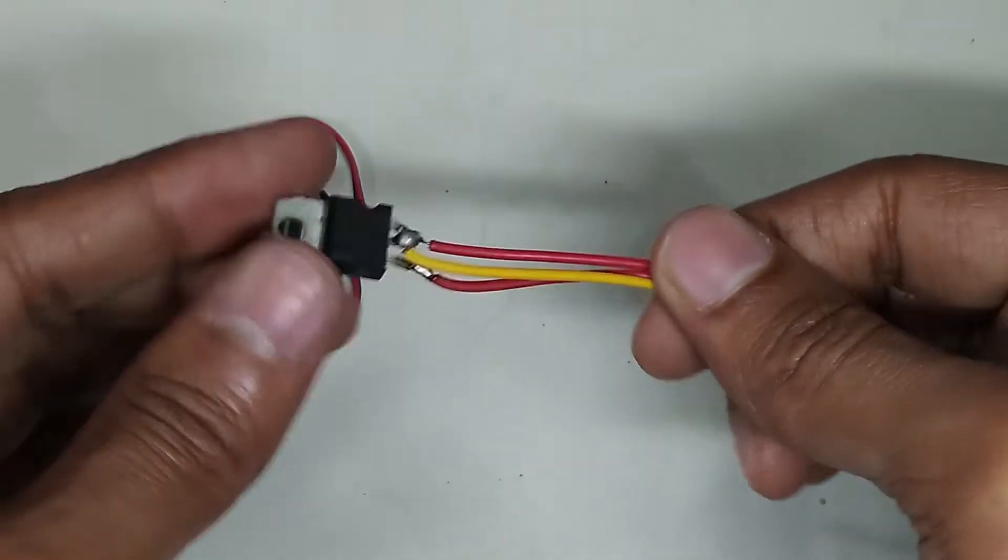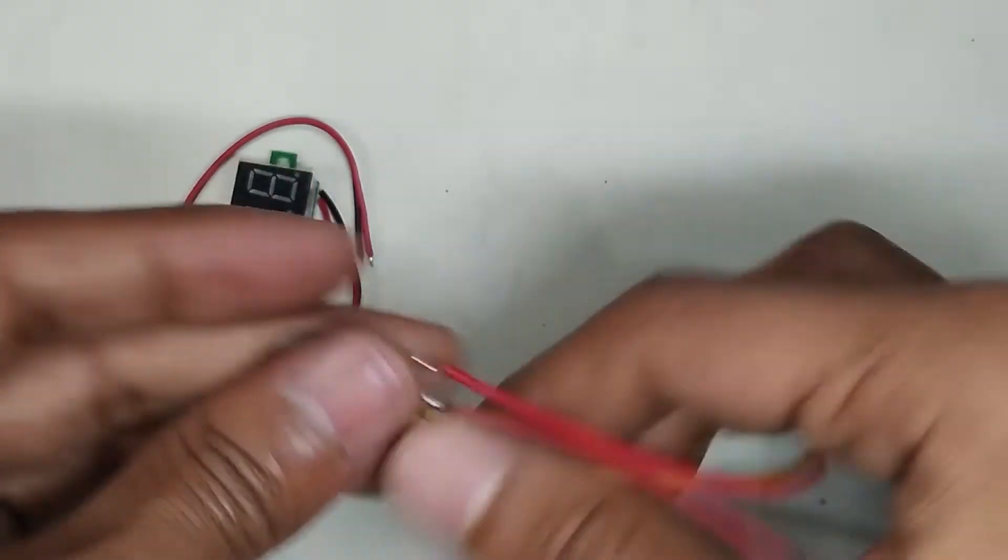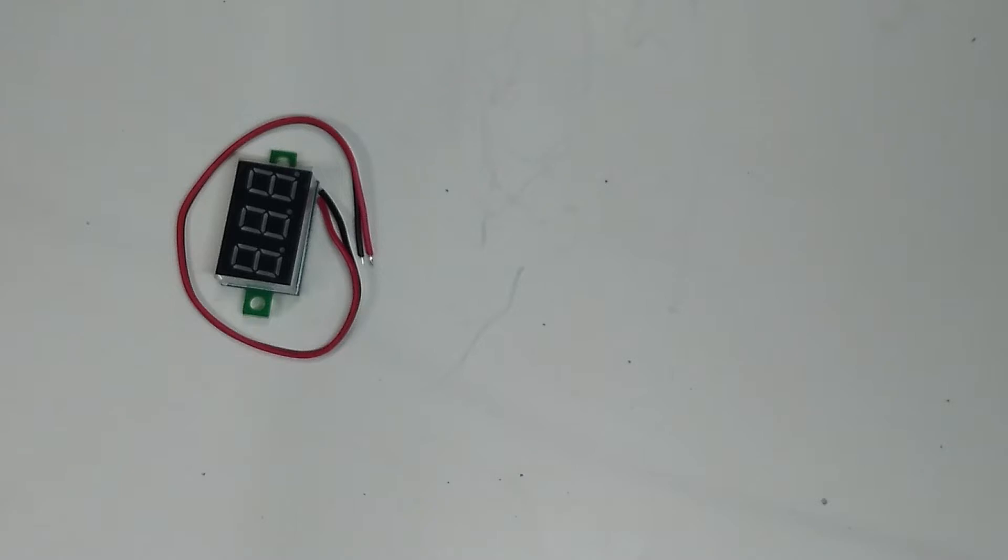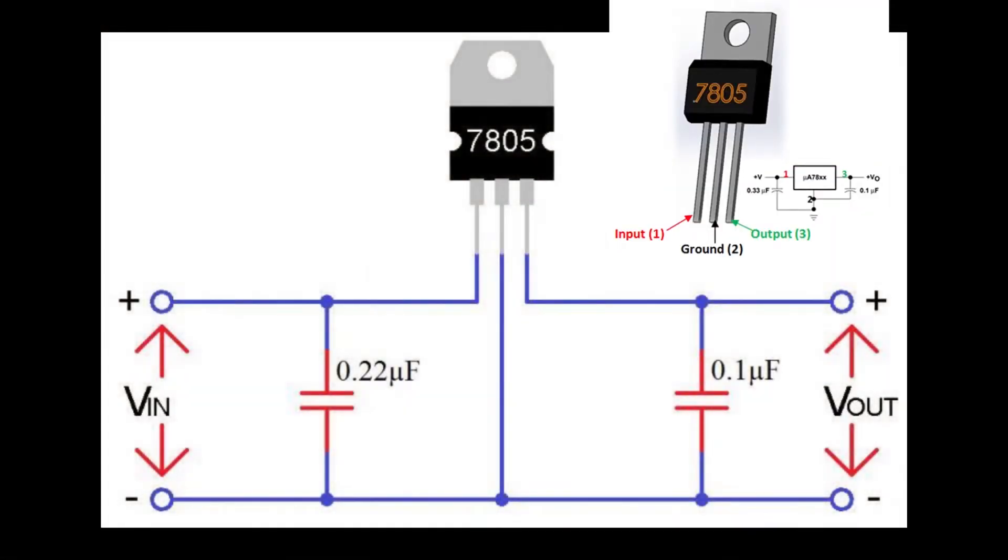It is LM7805 voltage regulator IC. It can easily handle up to 1 ampere of current. This is the circuit diagram of this voltage regulator IC.